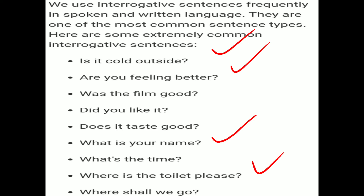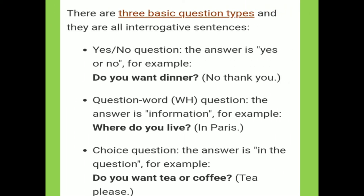There are three basic question types and they are all interrogative sentences. First, yes/no question — the answer is yes or no. For example: Do you want dinner? No, thank you. Second, wh-question — the answer is information. For example: Where do you live? Third, choice question — the answer is in the question.